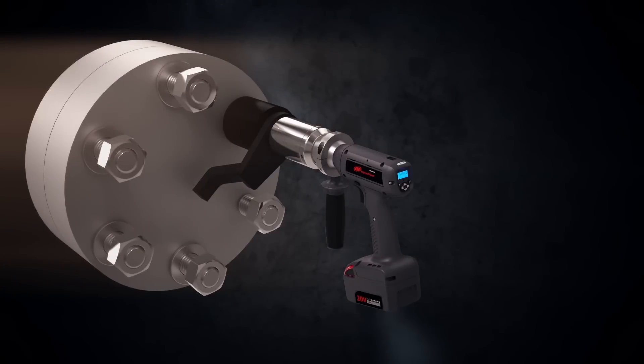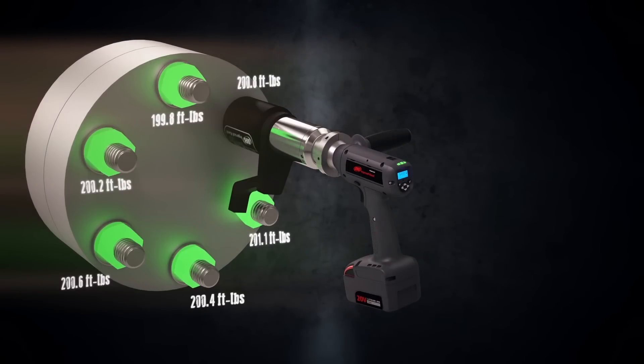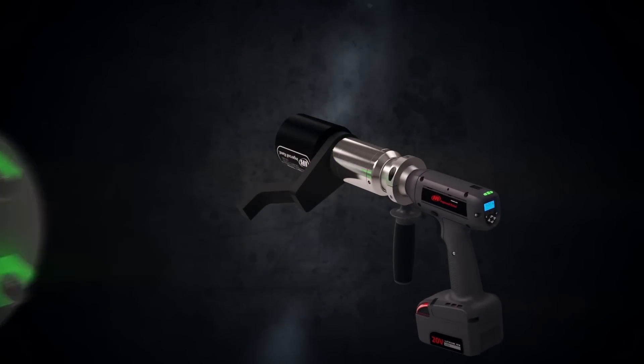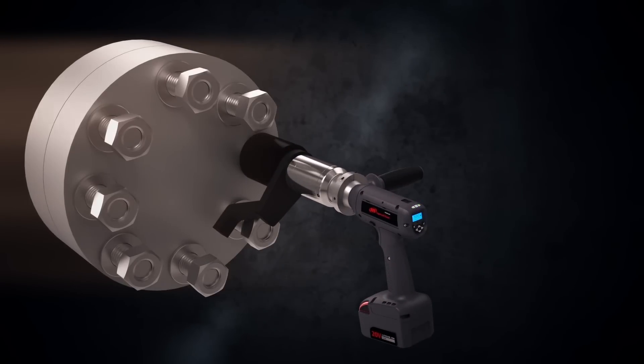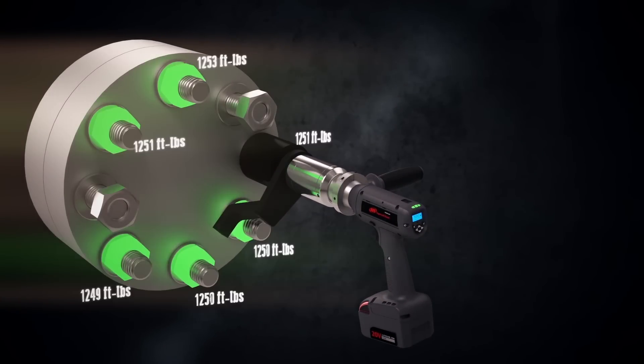Accuracy and process validation are what makes the QX multiplier design unique. Its error-proofing operation not only checks that the right torque is applied, but when used with the gain count feature, it makes sure that every one of your bolts have been tightened to spec.